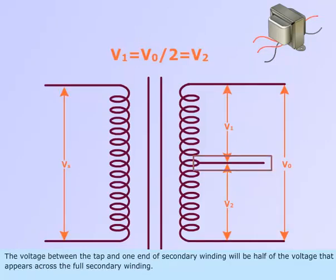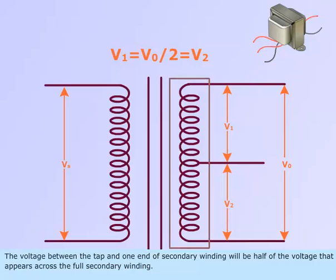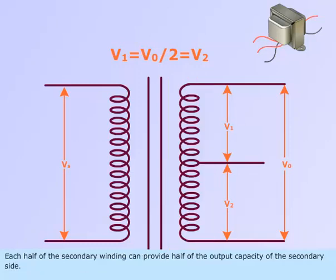The voltage between the tap and one end of secondary winding will be half of the voltage that appears across the full secondary winding. Each half of the secondary winding can provide half of the output capacity of the secondary side.